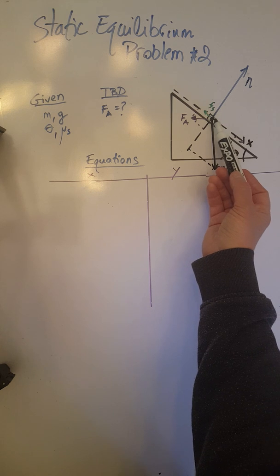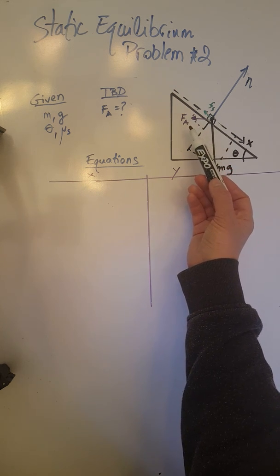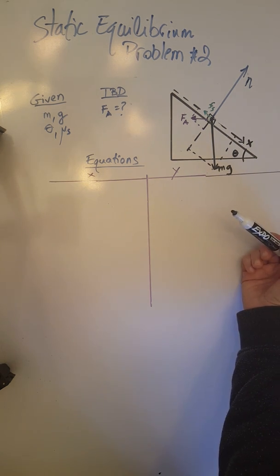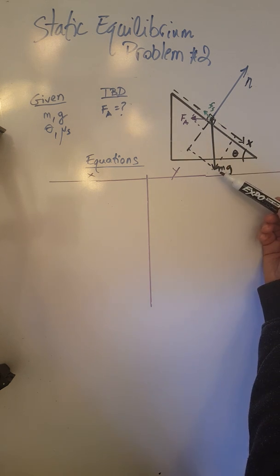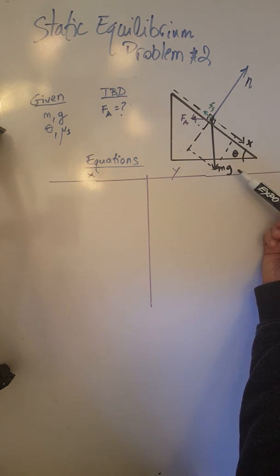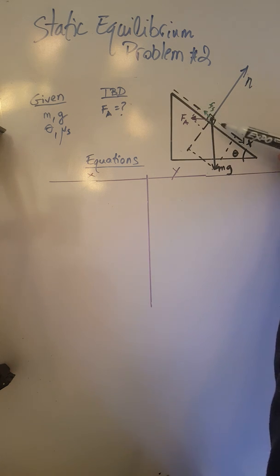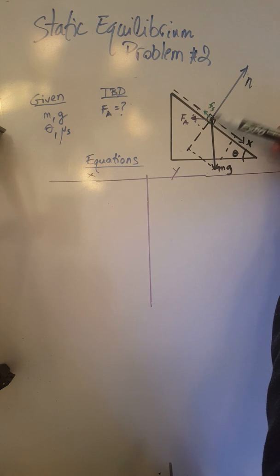There is an applied force, horizontal F_a in purple, that will keep this object at rest on the ramp. The other forces acting on the object are the force of gravity, mg, vertically downwards in black, the static force of friction — since the object would tend to move downwards, friction acts in the opposite direction — and the normal force, which is perpendicular to the surface.